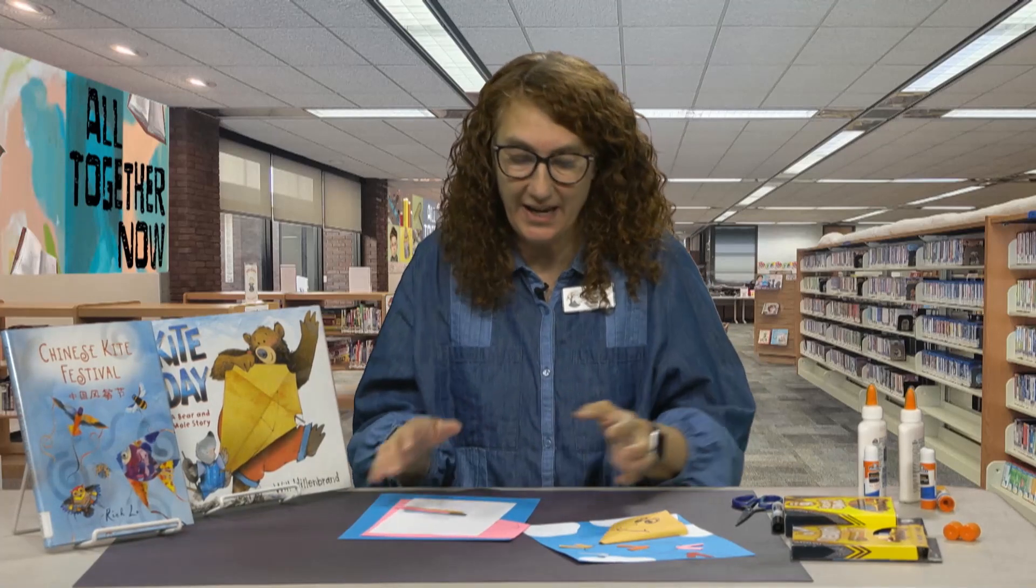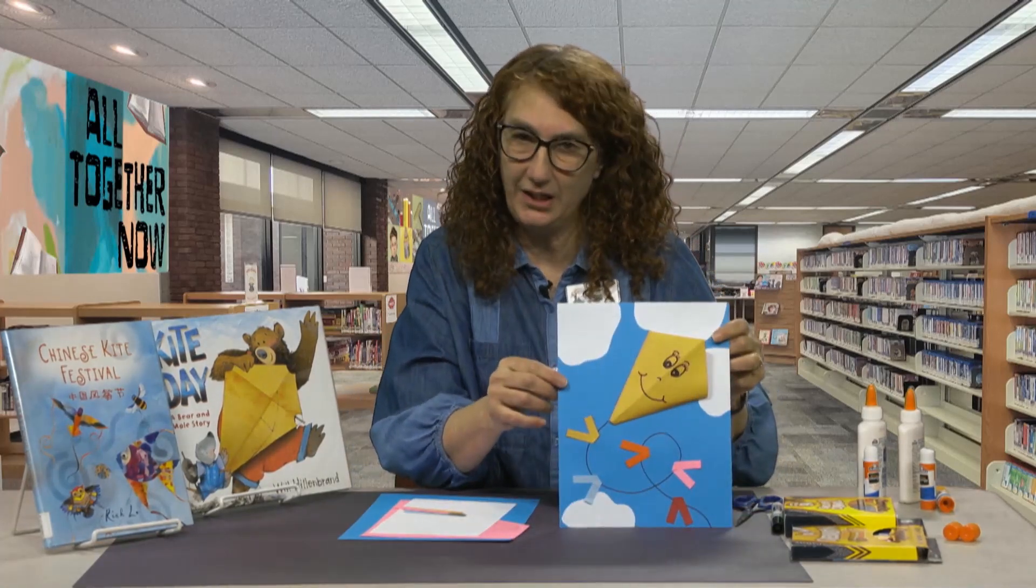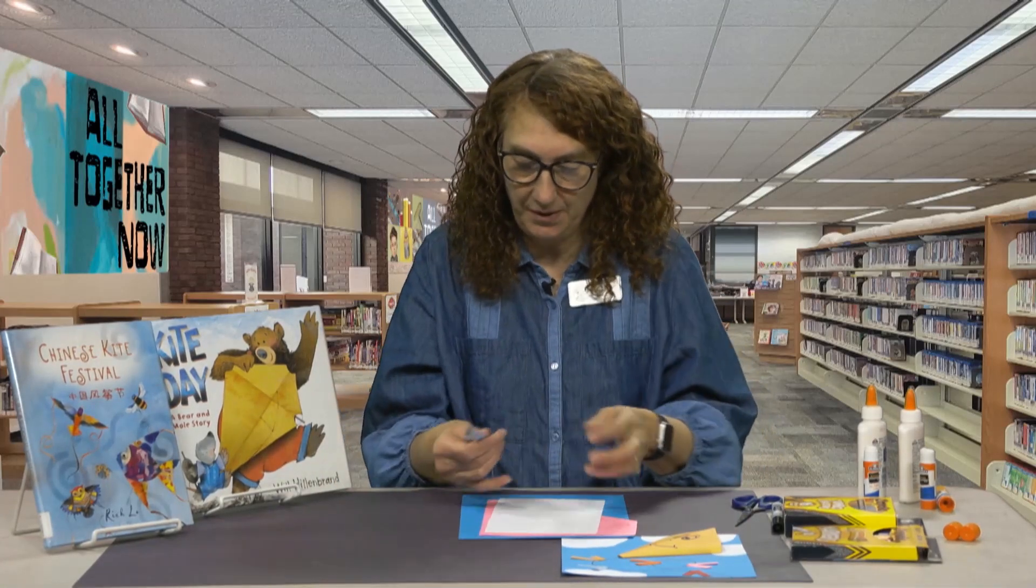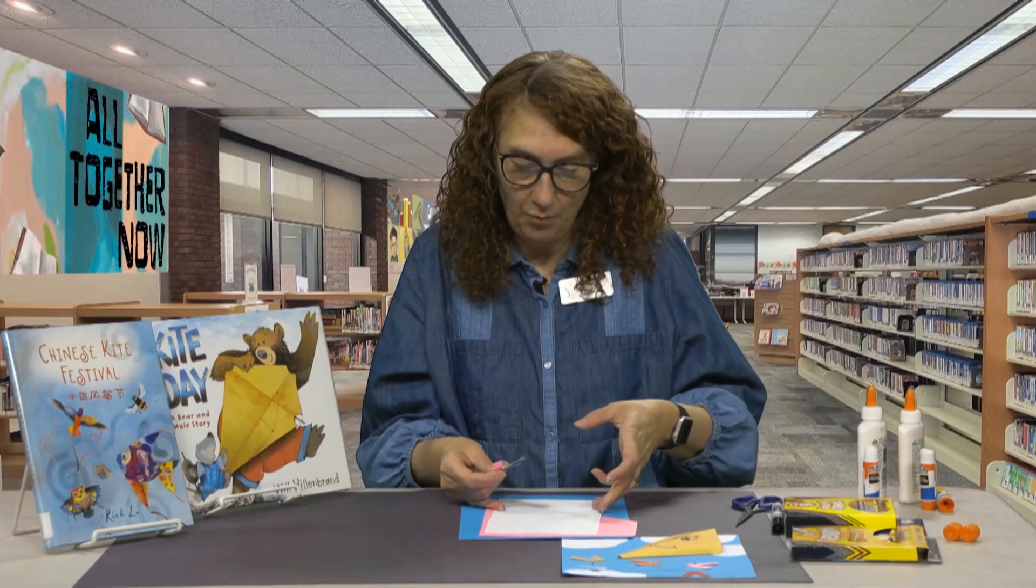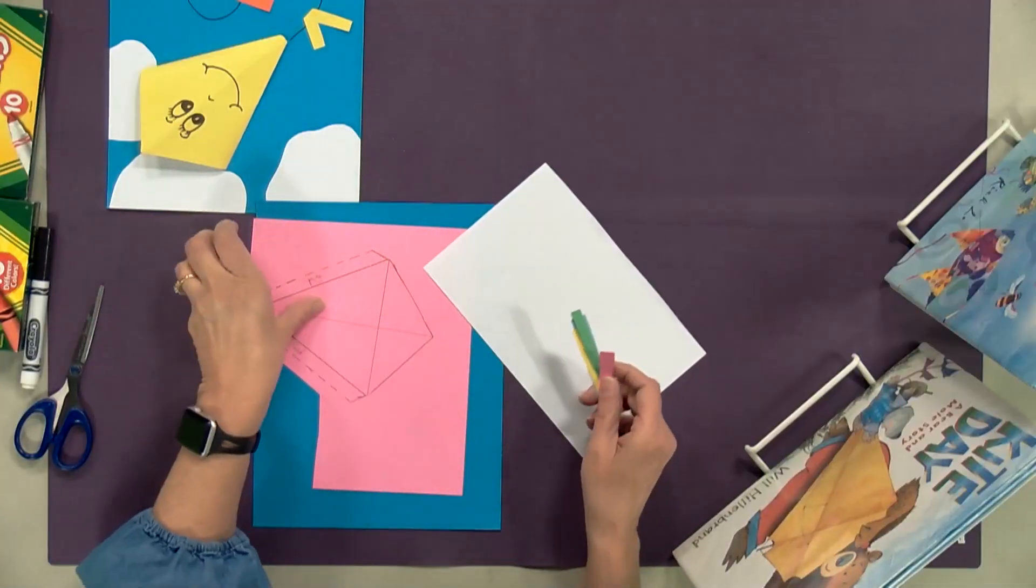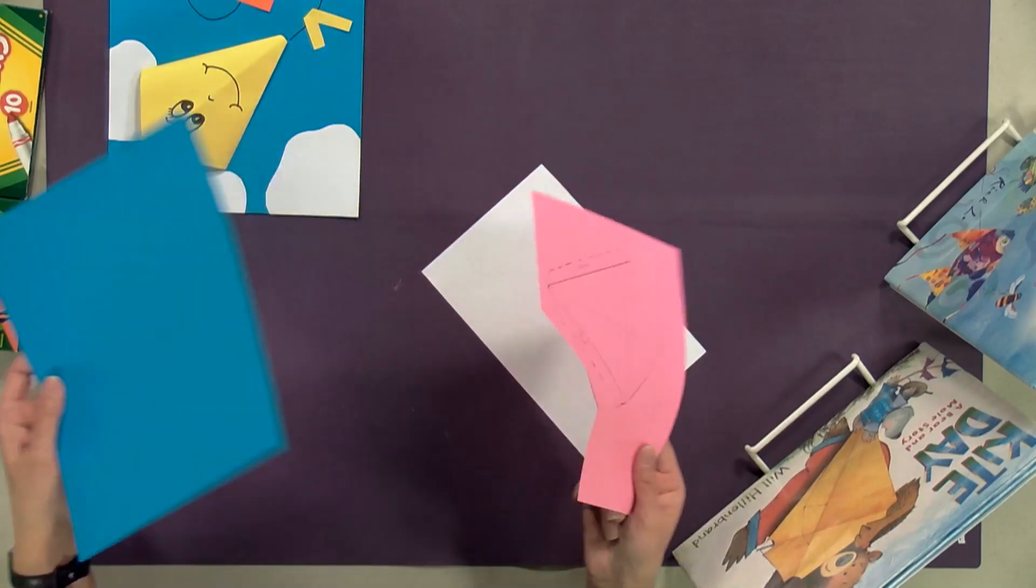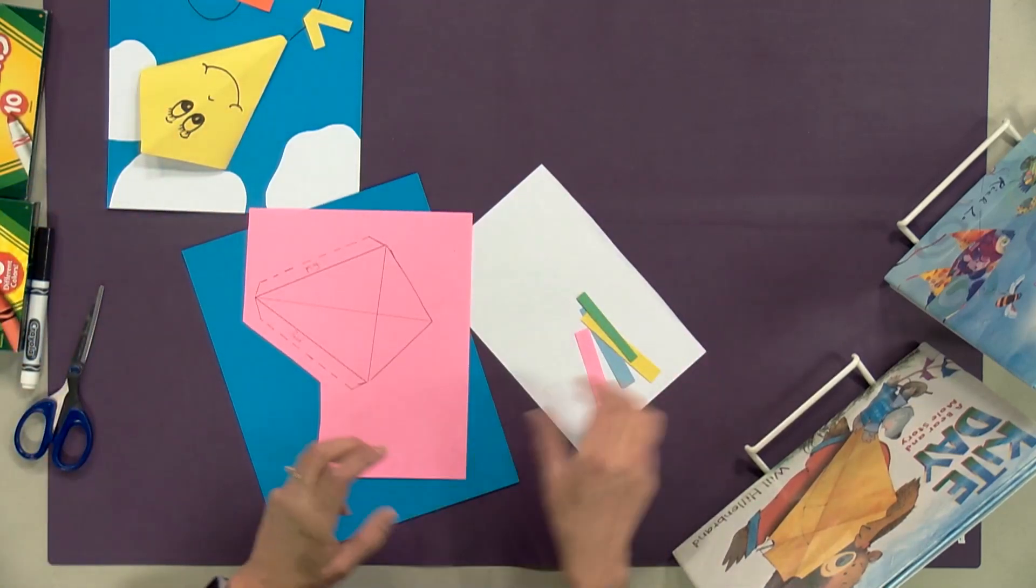Come on down to the library and grab a packet. We are going to be making this really cute kite today. In your packet you're going to have some little strips of paper, white paper, a kite template, and just a plain blue or black background. That's all you're going to need today, it's very simple.